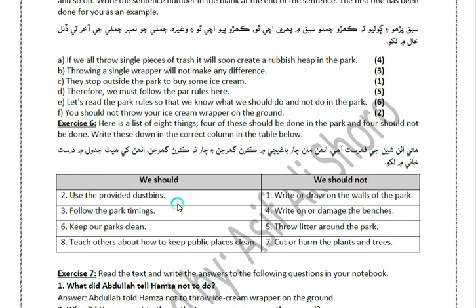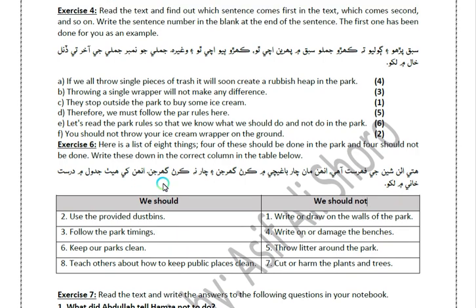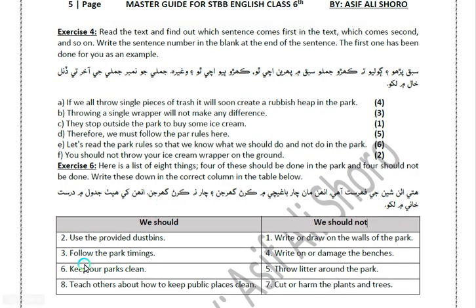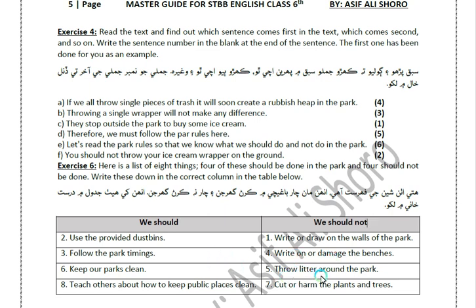Number 3 is: follow the park timings. Number 4 is: write on or damage the benches. Number 5 is: throw litter around the park.